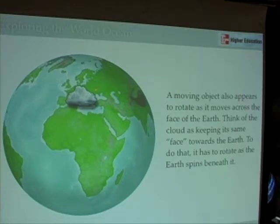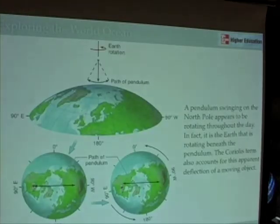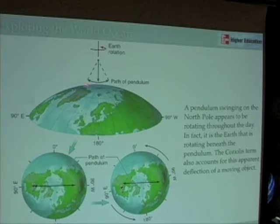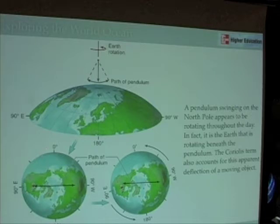There is a rotational component to the Coriolis effect as well. A good example of this can be seen if we look at a pendulum. If this pendulum is going back and forth — not moving, not changing its path — and the earth is rotating underneath it, the result will be something like this. At time zero, the pendulum is moving back and forth. Here's the United States, here's Russia.